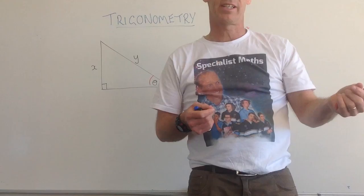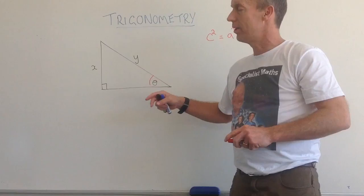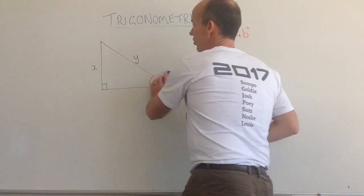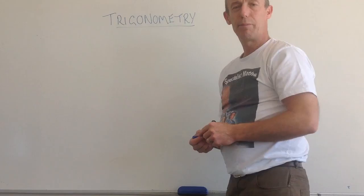Trigonometry, we're dealing with right angle triangles but we're dealing with two sides and one angle. So we might get given two sides and have to calculate the given angle, or we might get given an angle and one other side and have to calculate the other side.